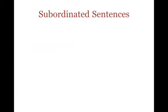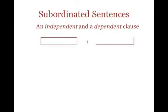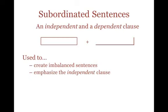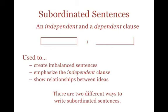The next type of sentence we'll look at is called a subordinated sentence, which consists of an independent clause and a dependent clause. Use subordinated sentences to create imbalance and emphasize the independent clause. Subordinated sentences also show relationships between ideas. There are two different ways to write this type of sentence, and the punctuation between the two is often confused.